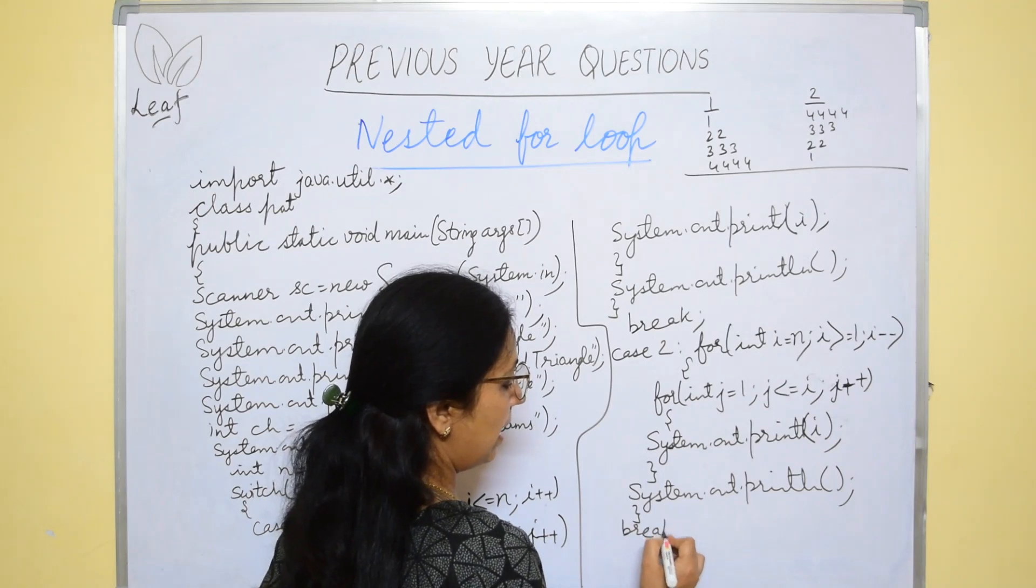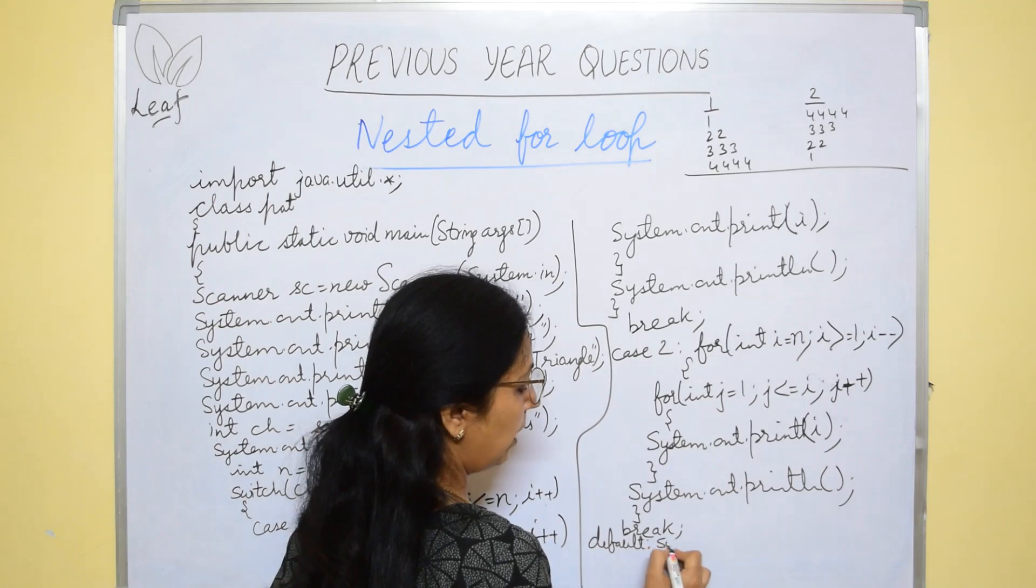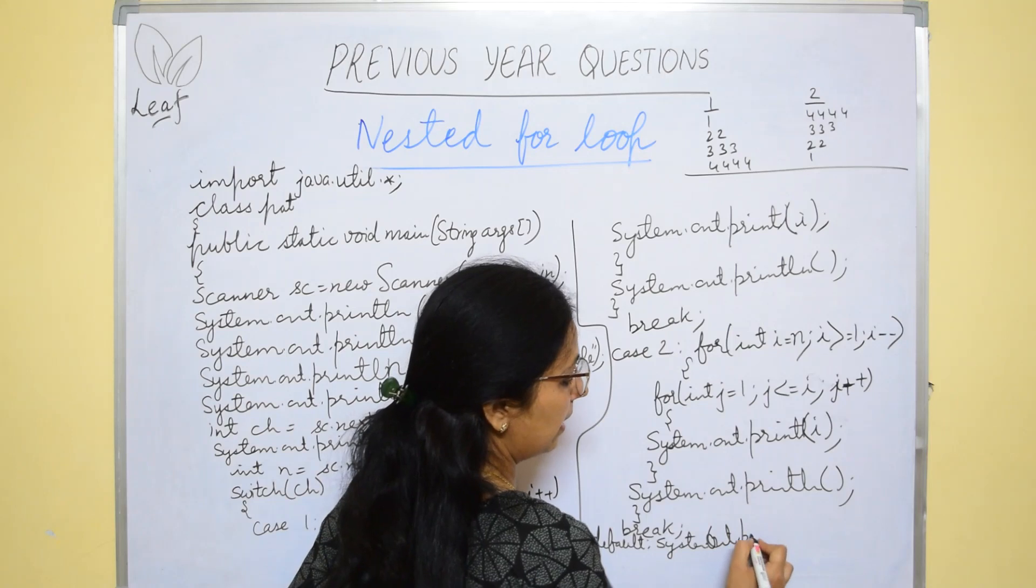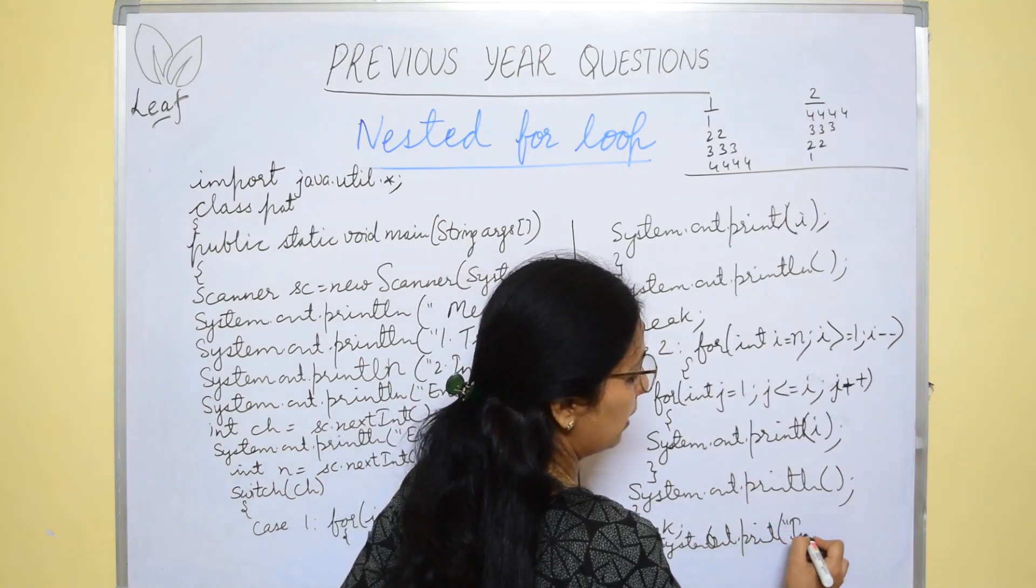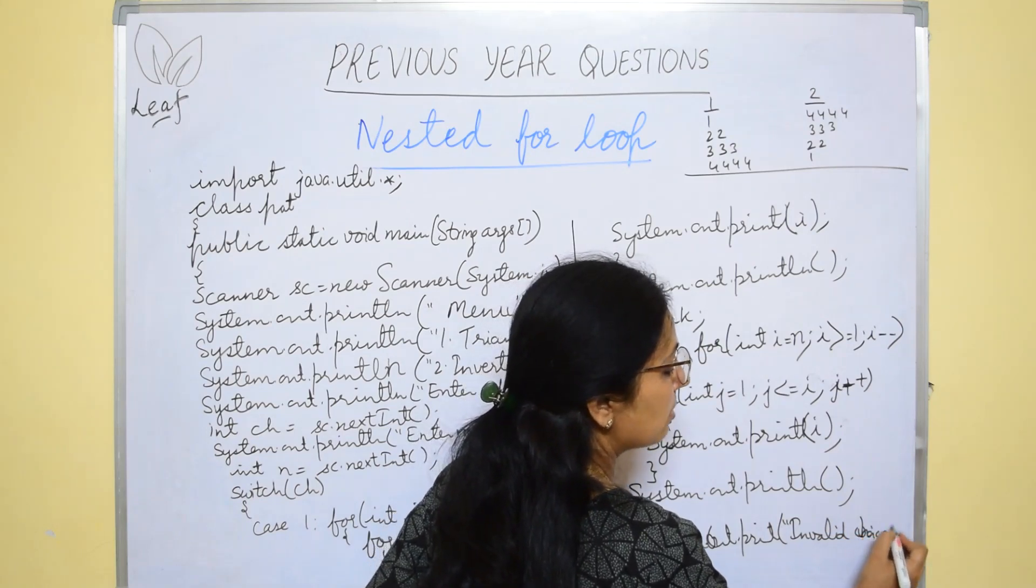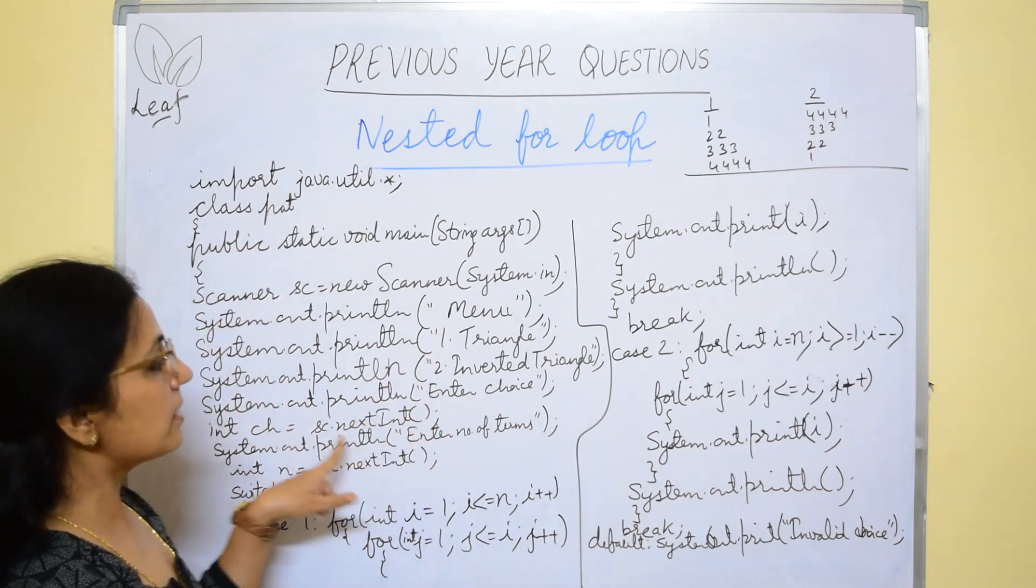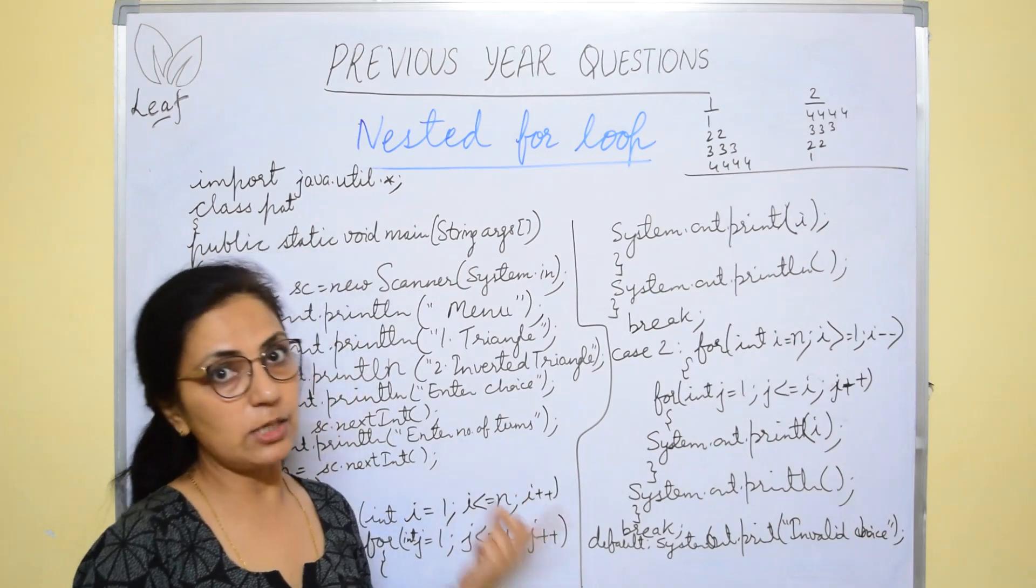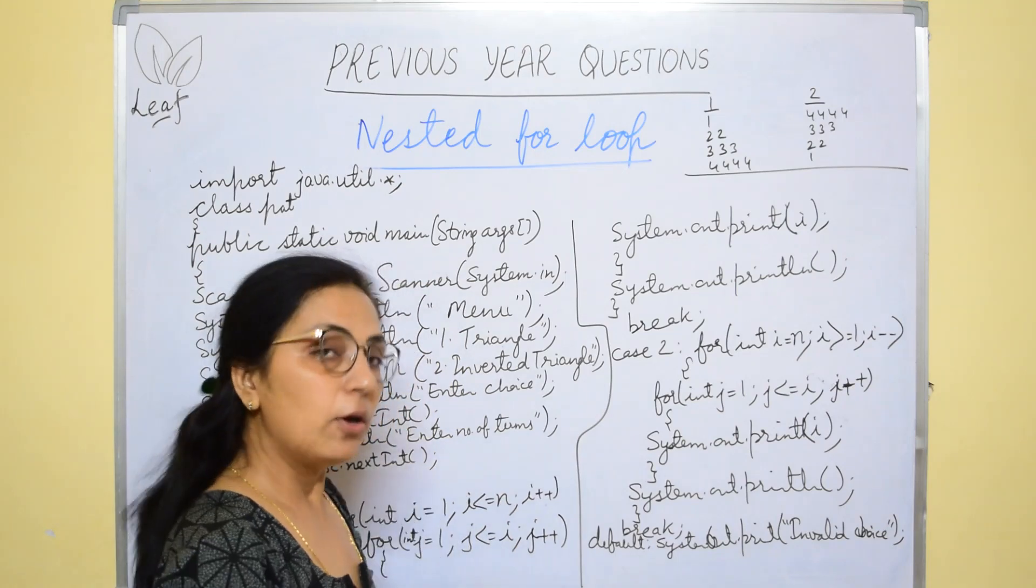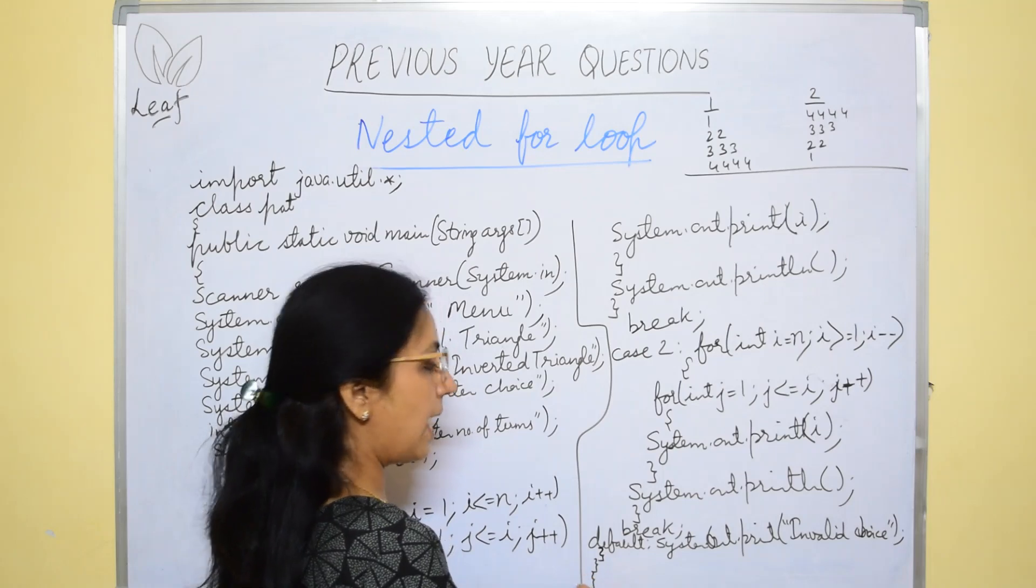Close it, break and after that you can write default statement showing that the choice is incorrect or invalid choice. Suppose the user enters choice as 5. Now we have only two options here and if I give the value choice as 5, what should be the message? That message you have to give in default statement, invalid choice, inappropriate choice, wrong choice. Then after this you will close switch, main and class.